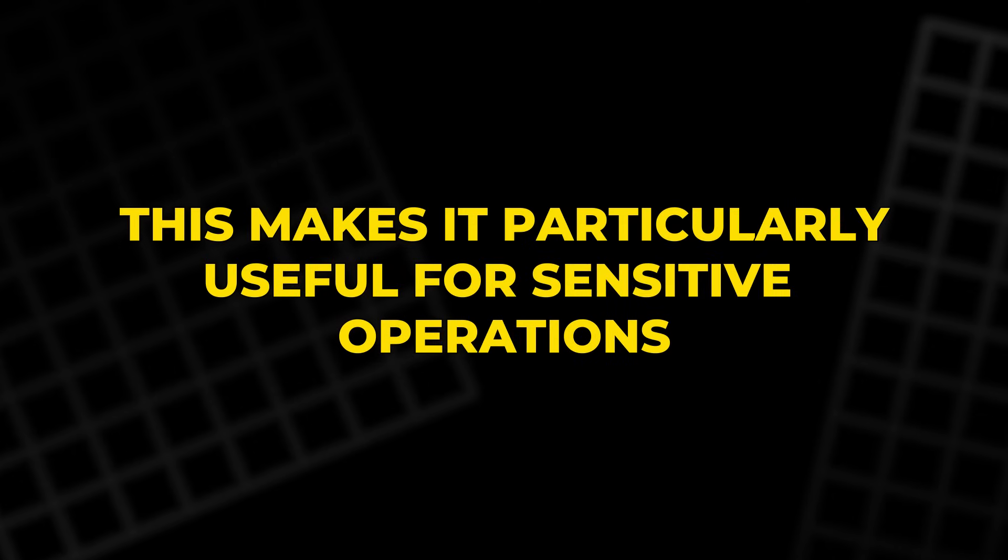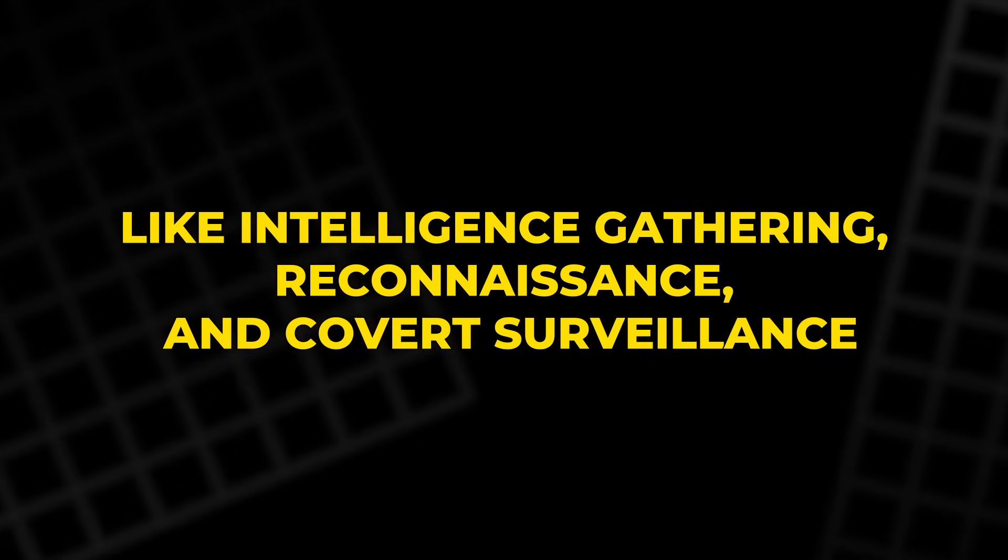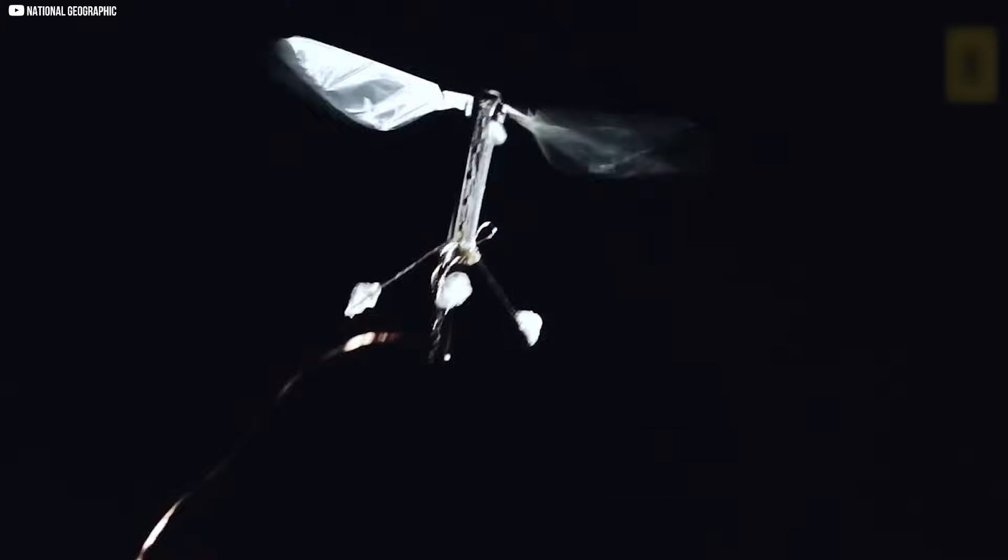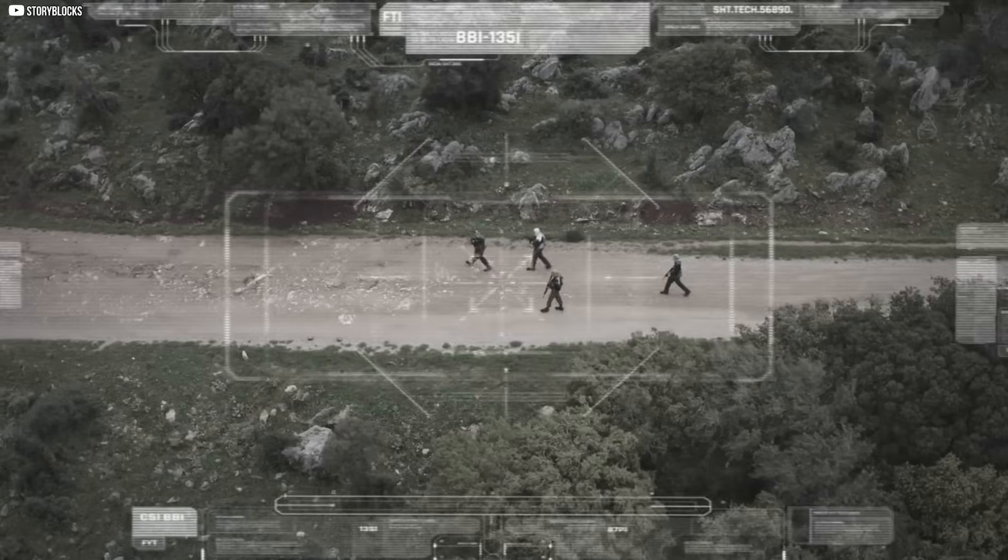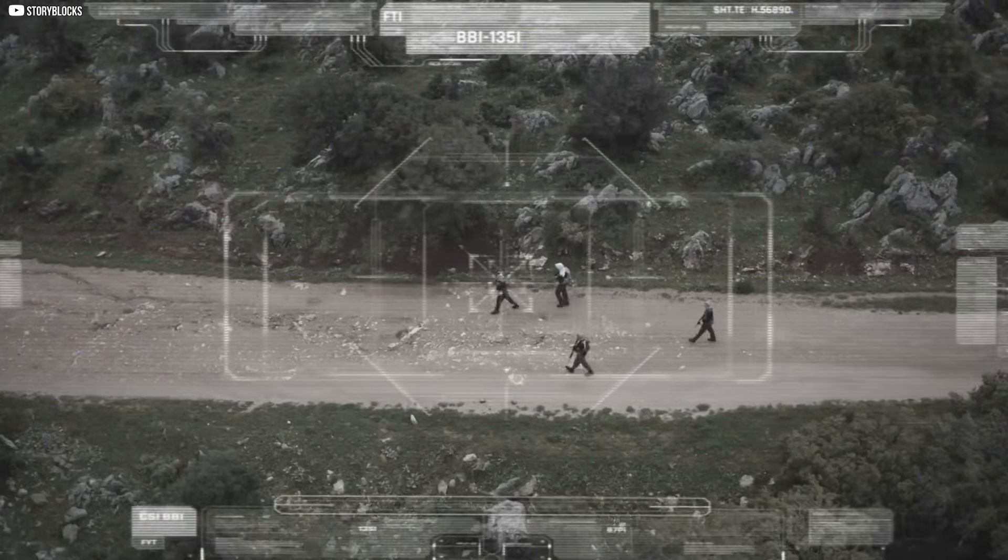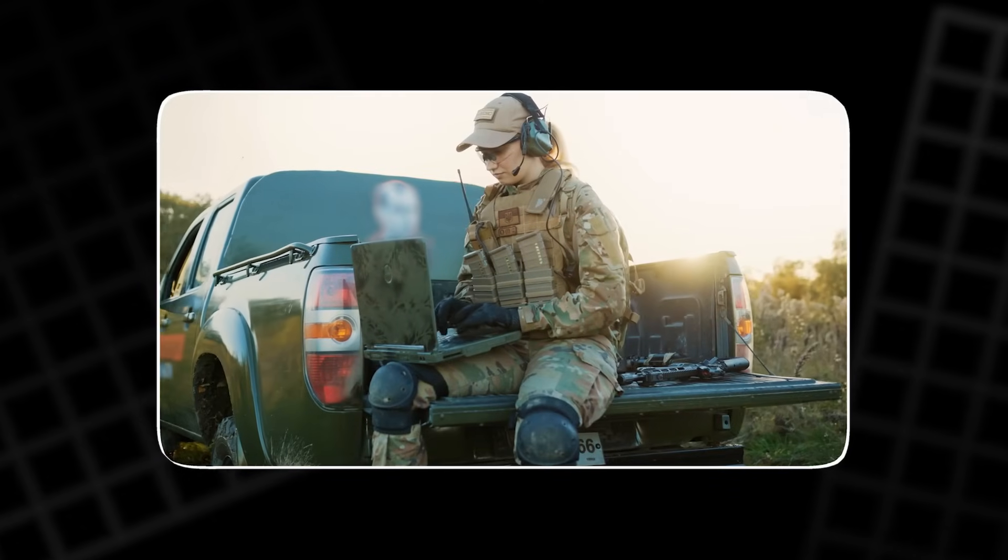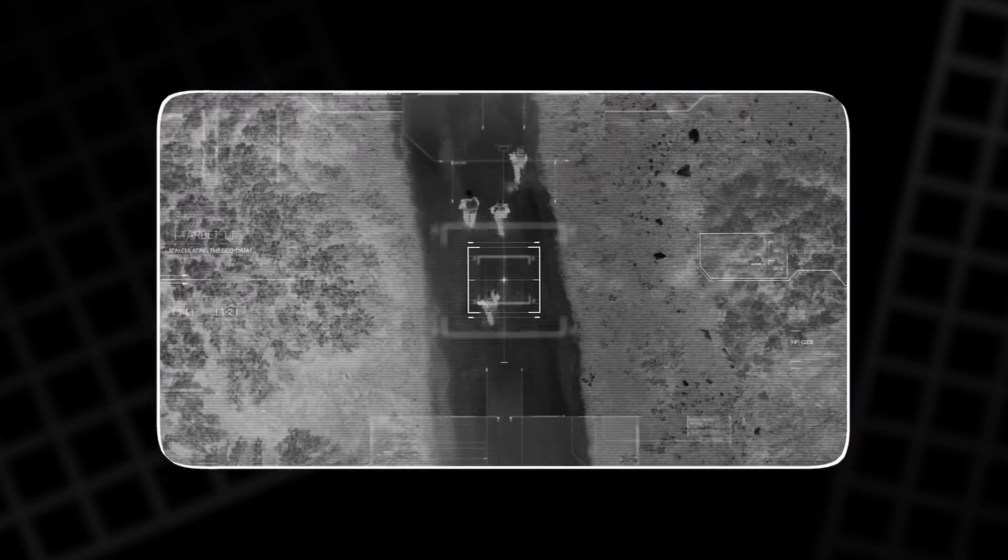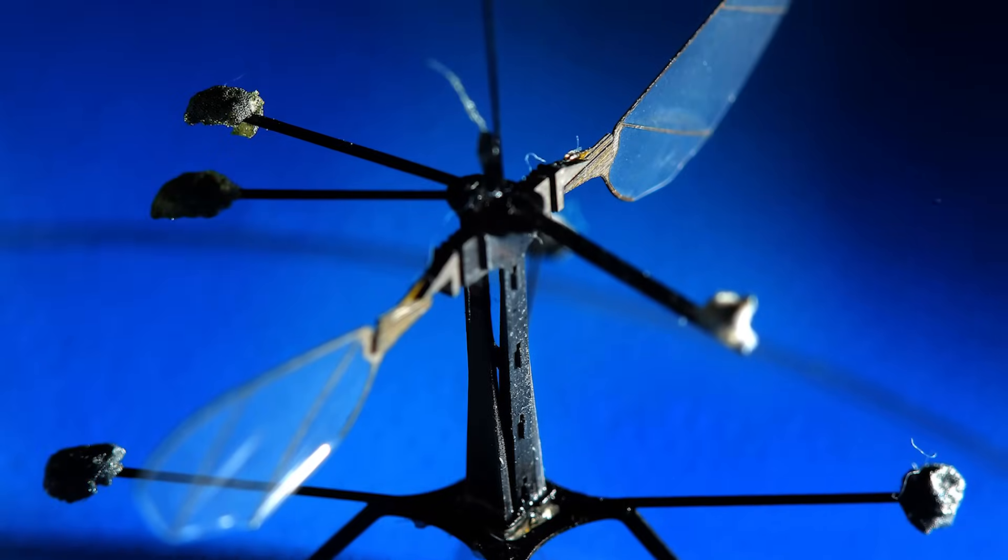This makes it particularly useful for sensitive operations like intelligence gathering, reconnaissance, and covert surveillance. One of its primary applications is in military and defense settings, where it can fly unnoticed over enemy positions, recording crucial data. Whether used for urban patrols, probing command posts, or gathering information in a combat zone, the Mosquito's silent presence makes it an invaluable asset.